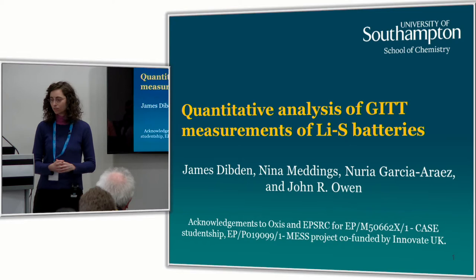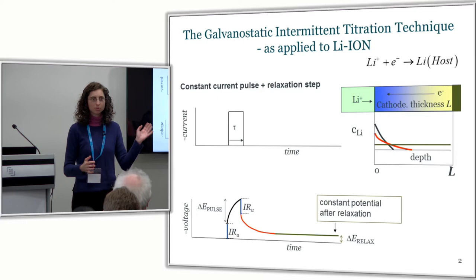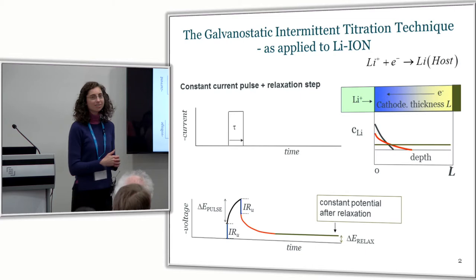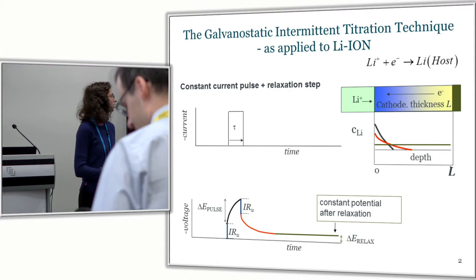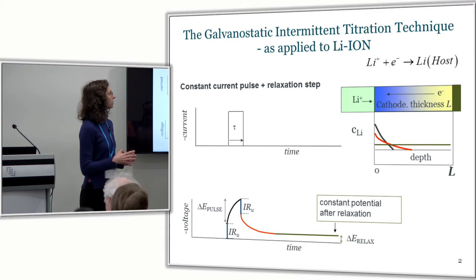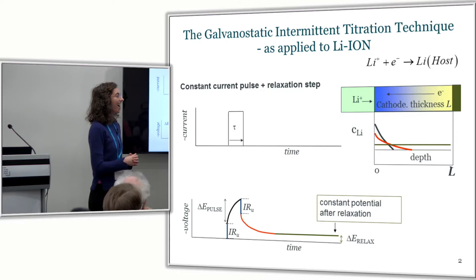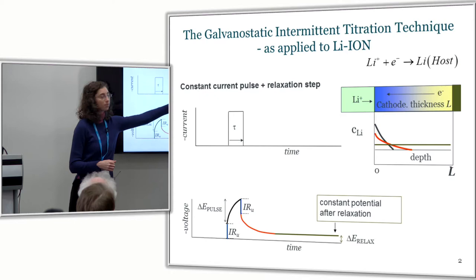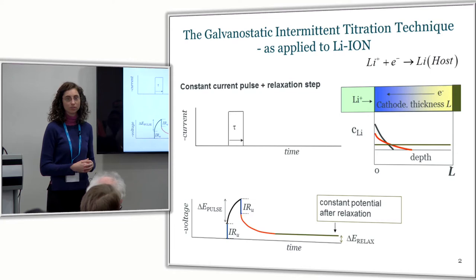Moving on to that, I don't know if you are familiar with GITT. Most of you say yes, so I will be quick here. GITT is a very powerful technique. It's been used very often in lithium-ion batteries. GITT is called Galvanostatic Intermittent Titration Technique. It's a technique in which we apply short current pulses followed by relaxation and then we monitor the evolution of voltage during that. And then we repeat this over and over.